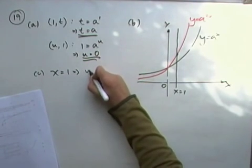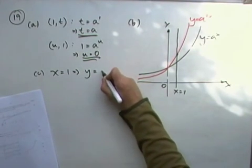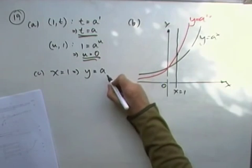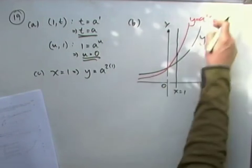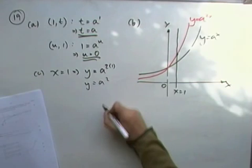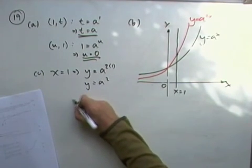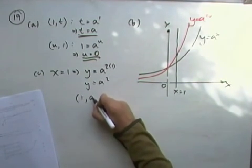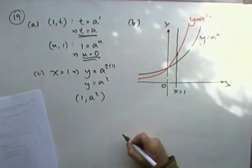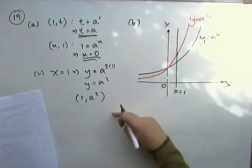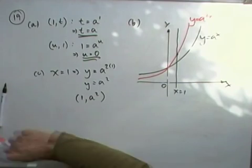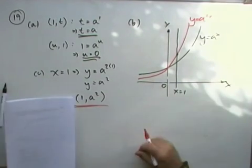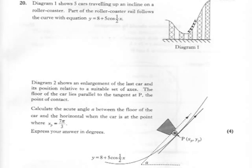y is going to equal a to the 2x1. Because 1's going to be in place of x. So that just means y is going to be a squared. Which means the point of intersection will be 1a squared. Or you could say since a is t on t squared. But I'll probably just stick with 1a squared. That's question 19. And the final question. Looks quite big, but it's not really. So pause and try question 20.